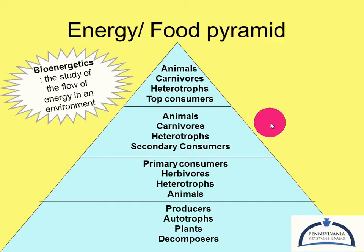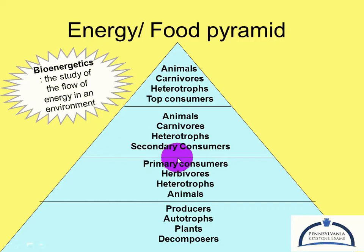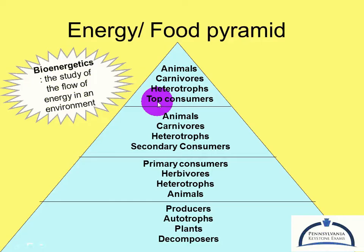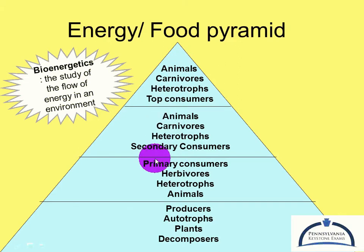Typically, animals fit into the primary consumer category. Going up one more, our secondary consumers are second to consume — they consume the primary consumers. They are also heterotrophs because they do not make their own food, and at this point we call them carnivores because they are eating other animals. At the top of the pyramid you can also have tertiary consumers, which are the king of the food chain — they typically don't have many or any predators. They're carnivores and heterotrophs because they're eating other organisms.